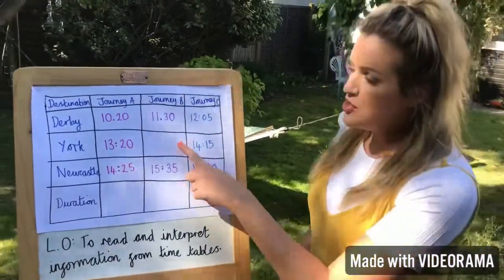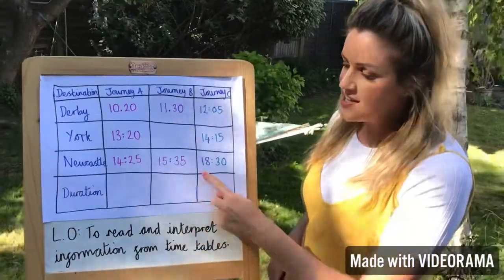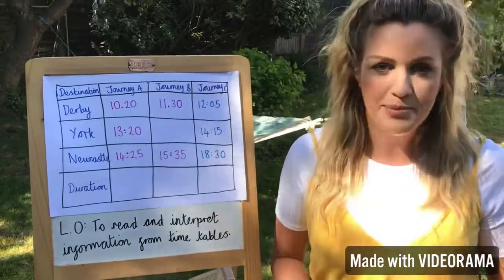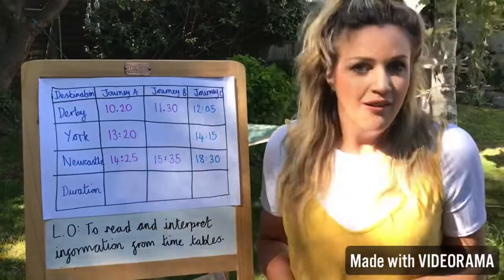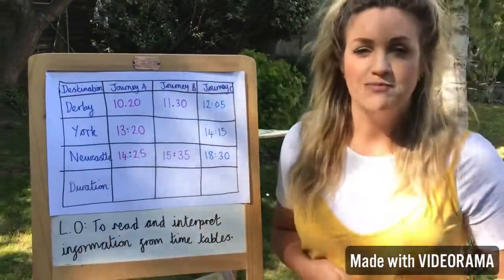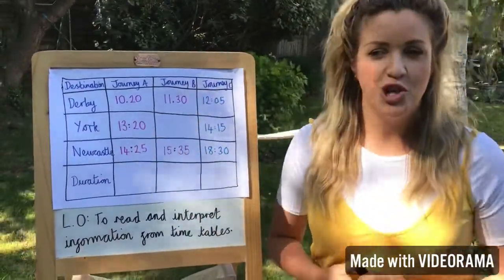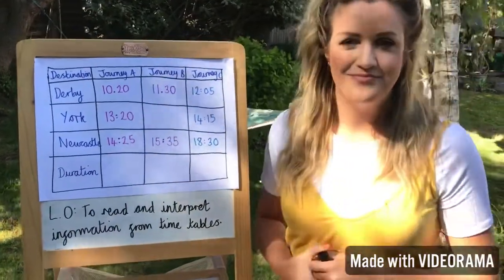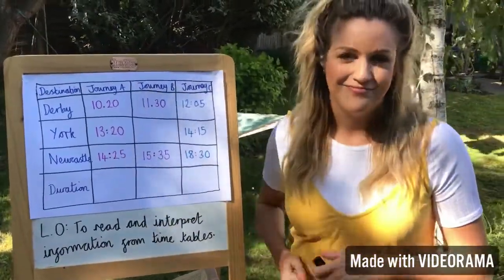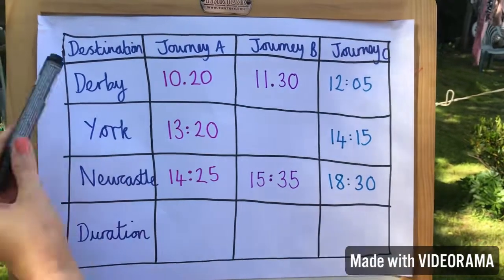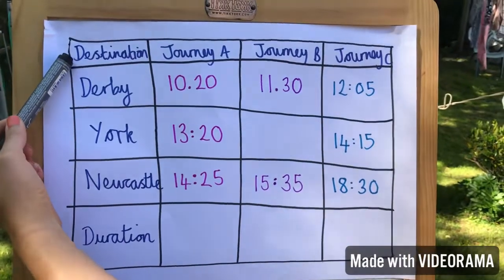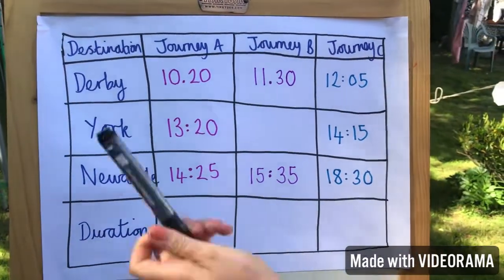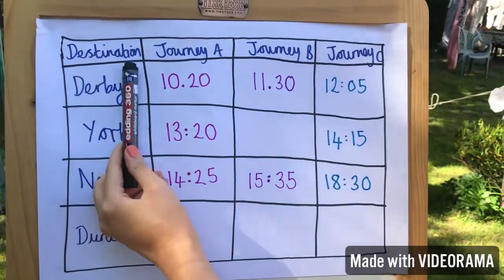You'll also notice that your timetable has got some gaps in it, but don't worry — I'm going to show you what to do. So this is a train timetable and up here we've got the word 'destination'.